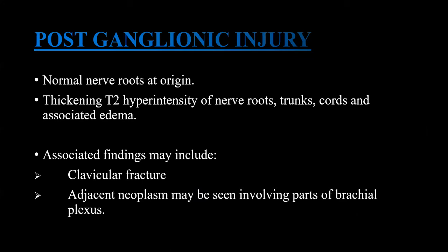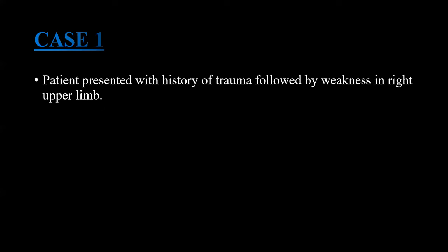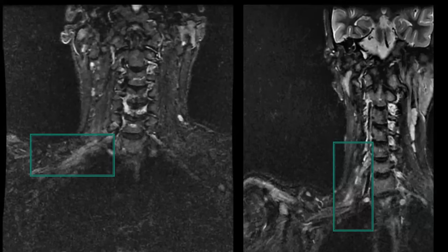In post-ganglionic injury, the nerve roots are usually seen normal at the origin, with thickening and T2 hyperintensity of the nerve root, trunk, cord, and associated edema. Associated findings can include clavicular fracture or adjacent neoplasm. In one case, a patient presented with history of trauma followed by weakness in the right upper limb. On MRI, T2 hyperintensity is noted in the upper trunk of the brachial plexus, suggestive of axonotmesis, i.e., grade 3 injury of the upper trunk of the brachial plexus.